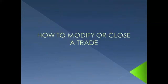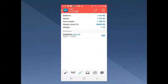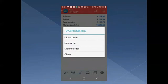Now you know how to place a trade. If you placed one by accident or you're in a trade and want to modify it — maybe extend the take profit — go to the third tab at the very bottom. Tap on the open currency pair under Positions and a window will pop open where you can choose to close or modify the order.